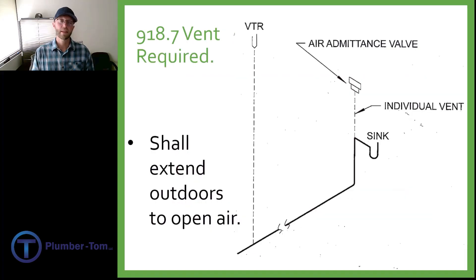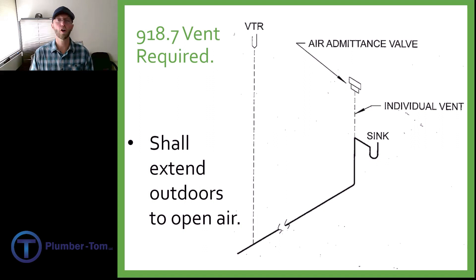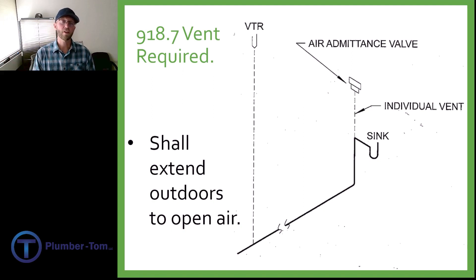918.7 talks about the requirement for a vent from the building drain all the way to open air, regardless of how or where you use air admittance valves throughout the building.